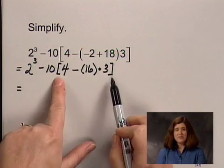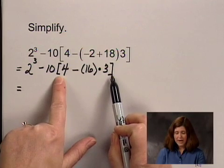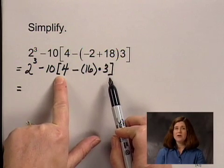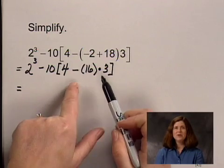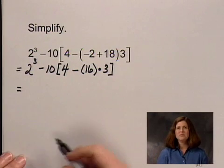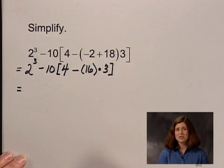Because in our next step, we're still simplifying within the brackets, and we want to do the operations within the brackets using the correct rules for order of operations, which means we want to do all multiplications and divisions before we do any additions and subtractions.